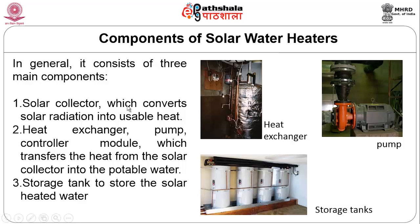Solar water heaters generally consist of three main components: a solar collector that converts solar radiation into useful heat; a heat exchanger, pump, and controller module that transfers heat from the collectors to potable water; and a storage tank to store the solar-heated water. In industrial systems, forced circulation with pumps is employed.